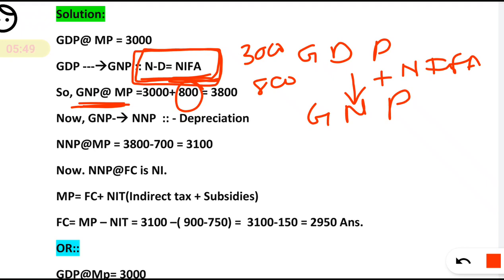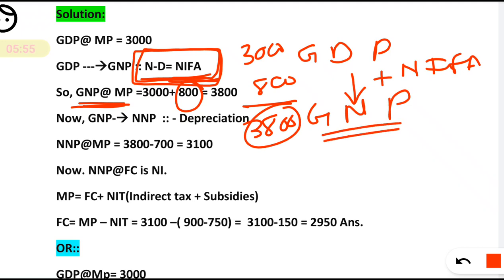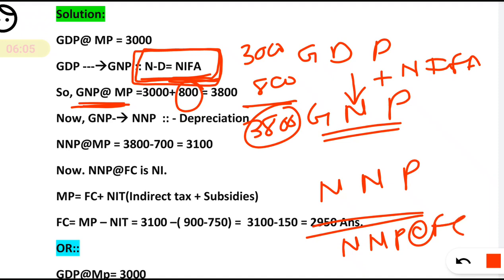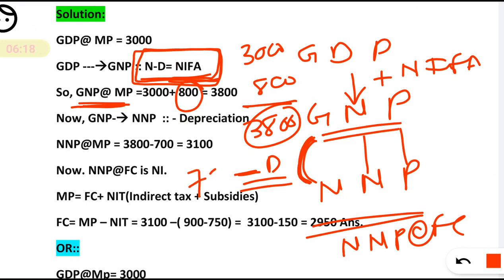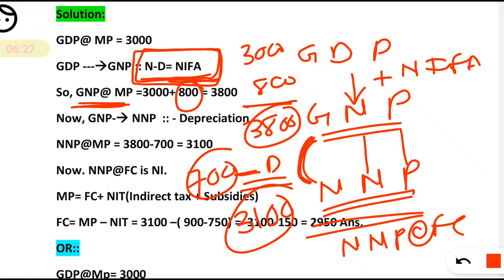GNP at market price is 3800. Now from GNP we have to calculate NNP, because our final target is NNP at factor cost. From gross to net, we subtract depreciation. Depreciation is given as 700, so 3800 minus 700 gives 3100. This is NNP — net national product — and it is still at market price, because we started from GDP at market price.